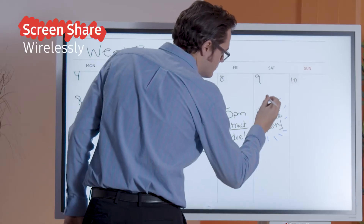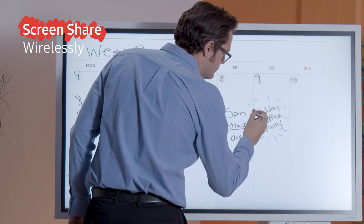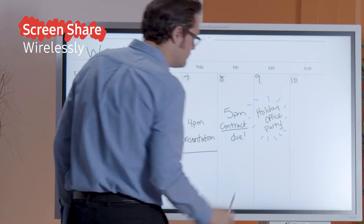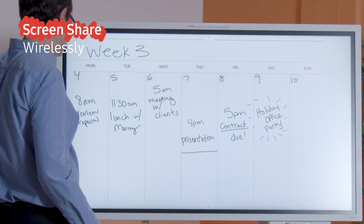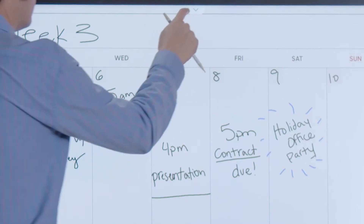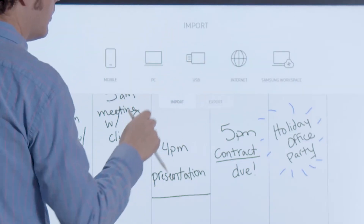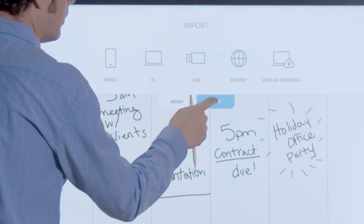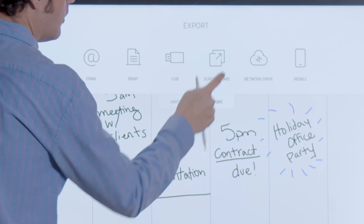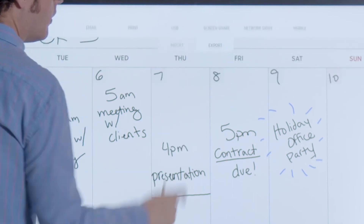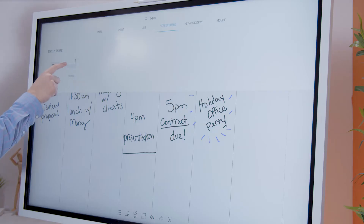Screen sharing of your interactive whiteboard can be done through wireless and wired connections. Tap the top arrow for the drop-down menu. Make sure you're in export and tap screen share.